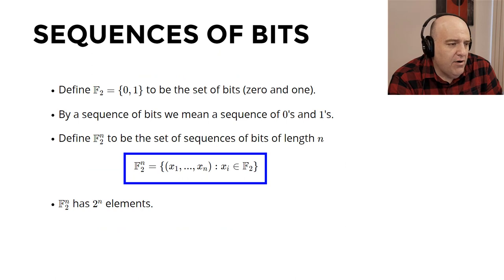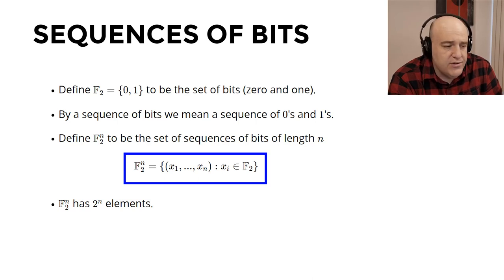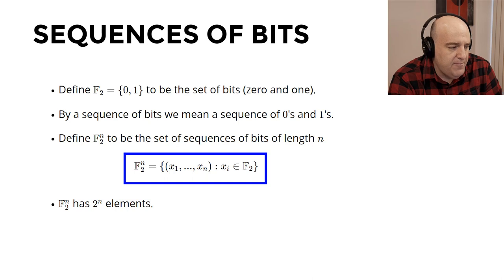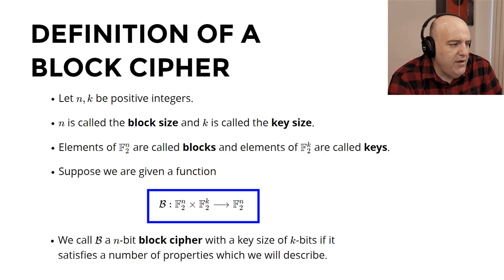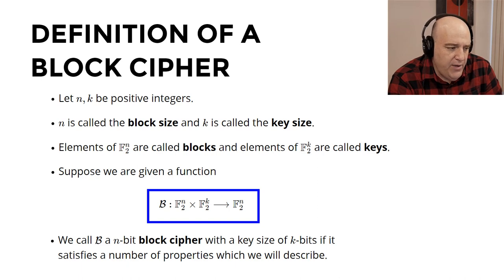Let's talk about block ciphers. First, we'll discuss sequences of bits. We let F₂ denote the set of bits — zero and one. A sequence of bits is just a sequence of zeros and ones. We define F₂ⁿ, where n is a positive integer, to be all sequences of bits of length n: x₁ up to xₙ. Then F₂ⁿ has 2ⁿ elements. A block cipher takes two positive integers n and k, where n is called the block size and k is called the key size. Elements of F₂ⁿ are called blocks, and elements of F₂ᵏ are called keys.